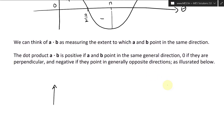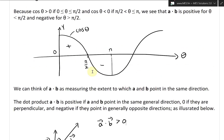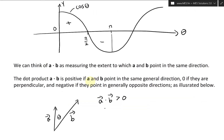For example, let's say you have vector a like this and vector b like this, with the angle theta between them. This is a small angle, so a dot b would be greater than zero, because this angle is less than 90 degrees — in other words, theta is acute, less than pi over two.